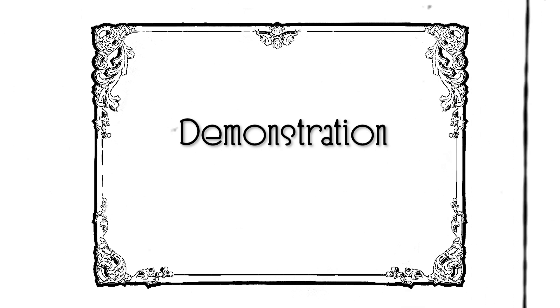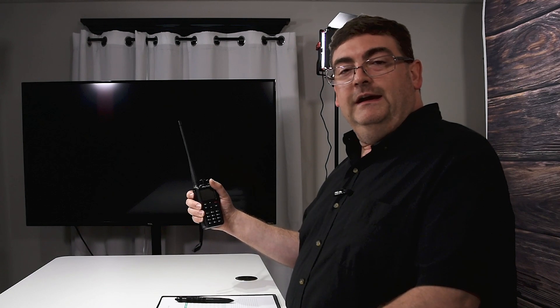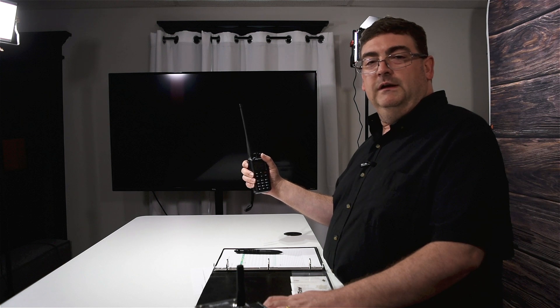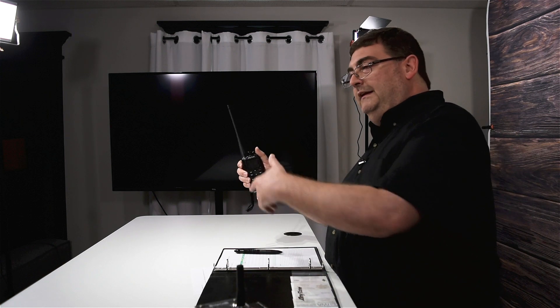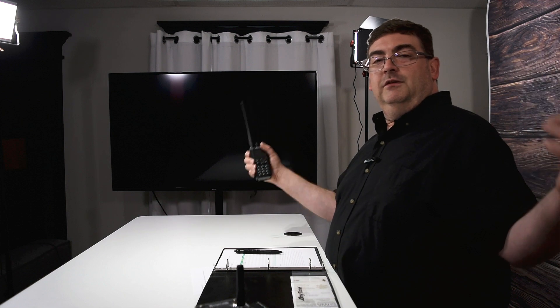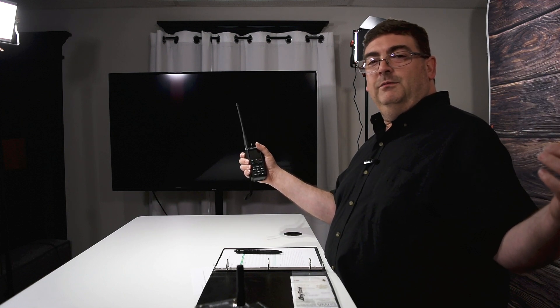Now we come down to the fun part. We're going to go ahead and make a contact here, using the steps of etiquette that we just discussed today. As soon as I key this, you should hear activity. There will be a DMR ID with my call sign sent out over the network — it'll be visible on their screen who's keyed up. It'll still be incumbent upon me to identify every 10 minutes once I key in.